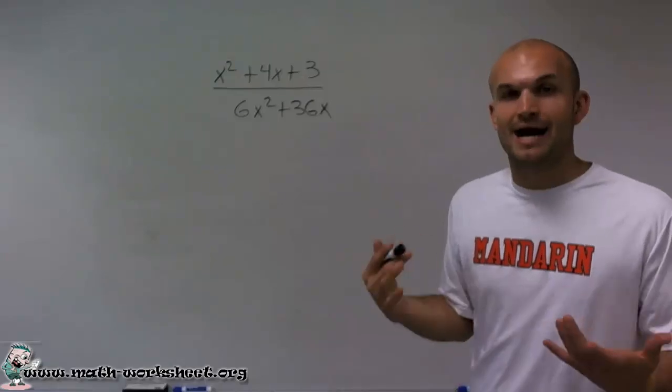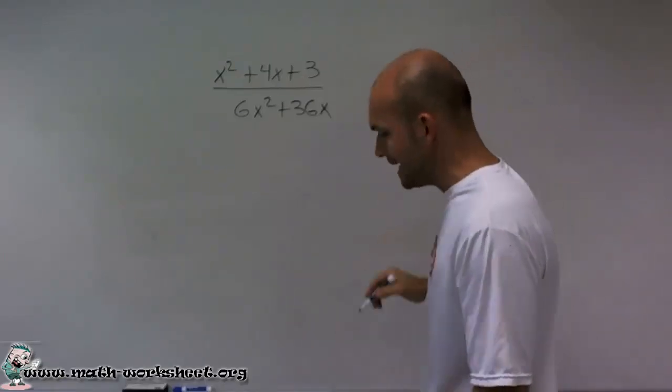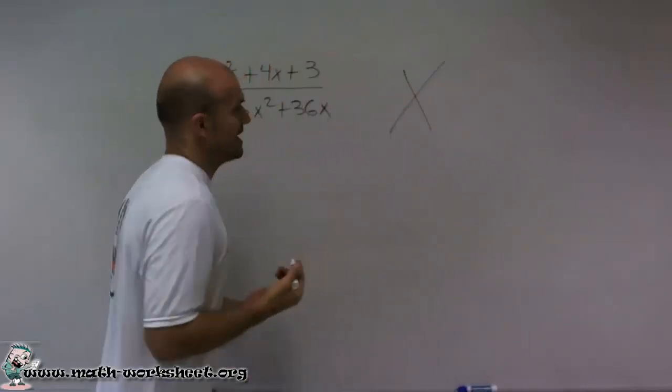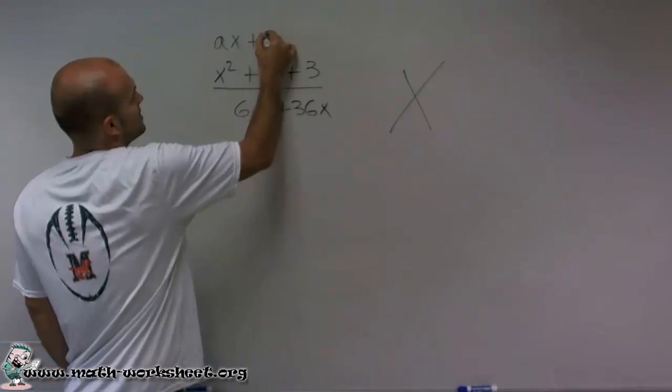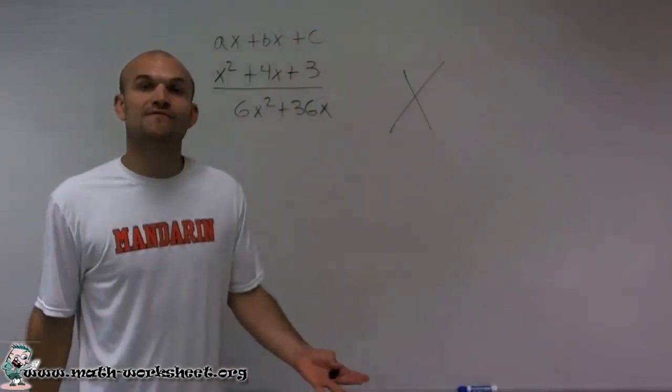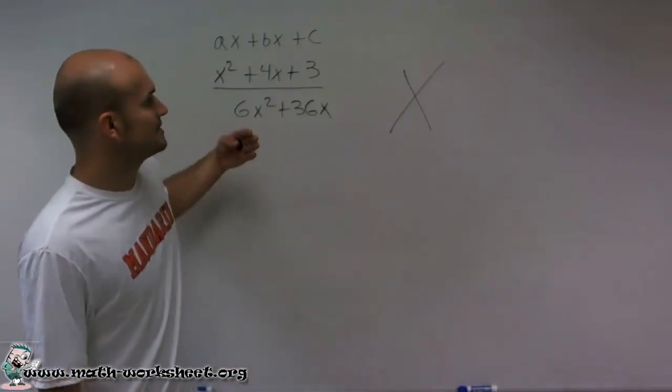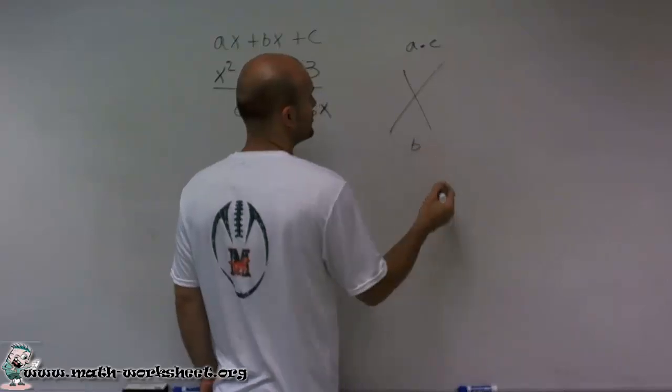So factoring a trinomial, I always like to use the visual aid of an x. And by using the visual aid of the x, what I'm able to do is take quadratic form, which is ax plus bx plus c, where a, b, and c are the coefficients of each term. And what I like to do is, for this visual aid, I multiply a times c, and I put b on the bottom.